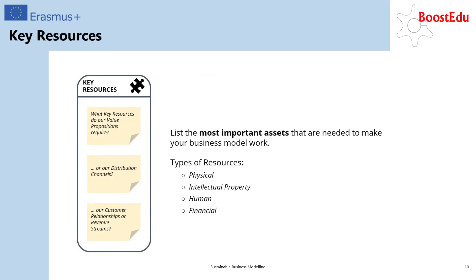The sixth building block represents the key resources and they list all the important assets you need to make your business model work. Your resources can come from four different categories. They can be either physical, like office buildings, machines, vehicles. They can be human — so basically all the people that are working for you. But it can also be financial resources or intellectual properties, like brands, patents and copyrights.